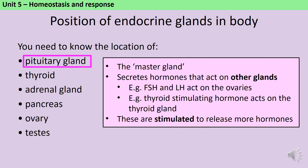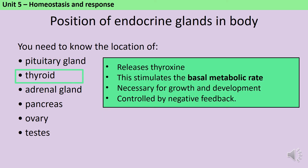The pituitary gland also makes thyroid-stimulating hormone, which, as the name suggests, stimulates the thyroid gland so that it makes thyroxin. The thyroid gland releases thyroxin, which stimulates the basal metabolic rate. This is a hormone necessary for growth and development. High levels of thyroxin increase the formation of glycogen, lipids and proteins, and increase the rate of respiration.